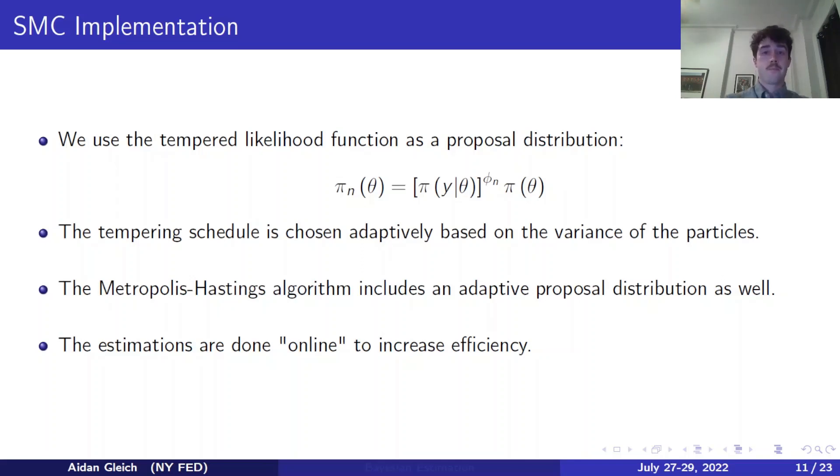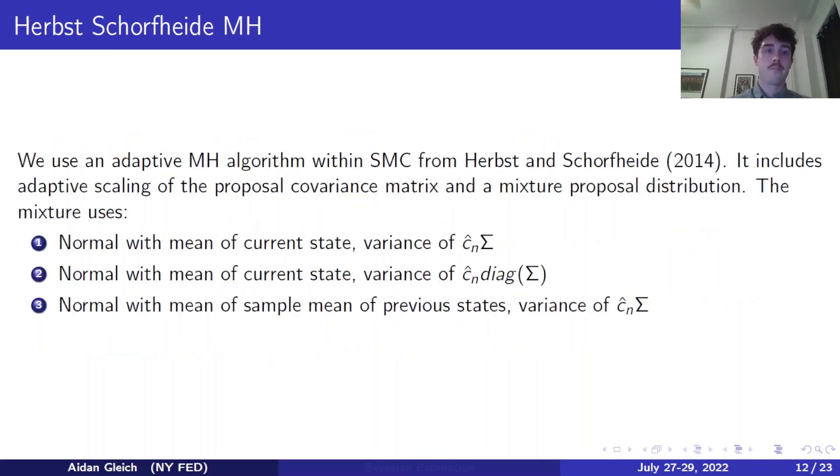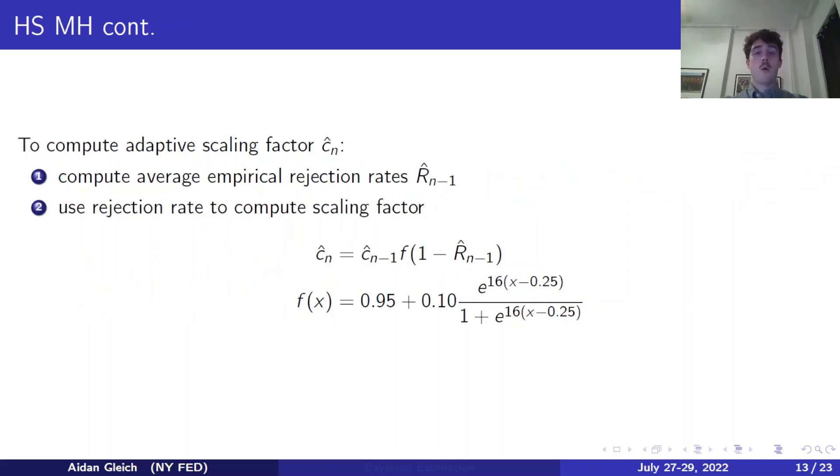We use an adaptive tempering schedule to even further increase efficiency in our algorithm. And that adaptive schedule is based on the variance of the particles. We also use an adaptive Metropolis-Hastings algorithm within SMC. And this adaptive MH algorithm has an adaptive proposal distribution. I'm going to talk more about this MH algorithm in the next few slides. And additionally, we do these estimations online to increase efficiency. And I'll speak about what that means after I've discussed the adaptive MH algorithm. So this algorithm is also given within that Herbst and Schorfheide paper. It includes an adaptive scaling of the proposal covariance matrix as well as a mixture proposal distribution.